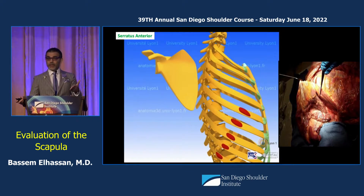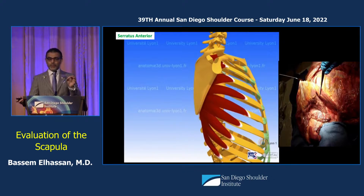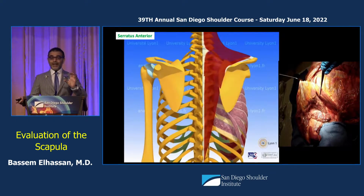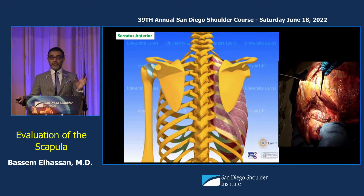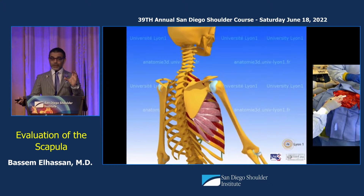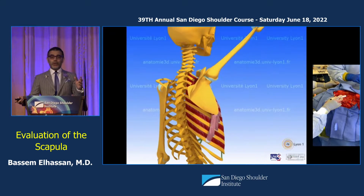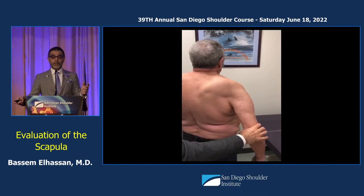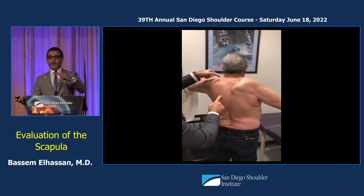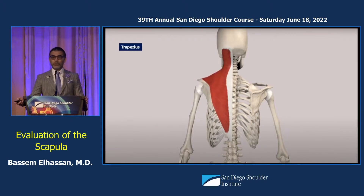The serratus originates from the chest and inserts on the medial scapula, with the most important part being the distal portion. It protracts the scapula anteriorly during shoulder motion and keeps it on the chest wall. During flexion, the distal scapula needs to keep moving forward to clear the subacromial space. If the serratus is not functional, the patient can have a perfect deltoid and rotator cuff, but the scapula will become unstable and the patient becomes locked and cannot move as much.